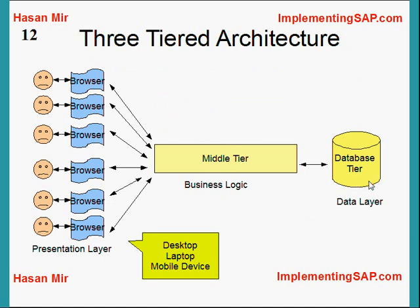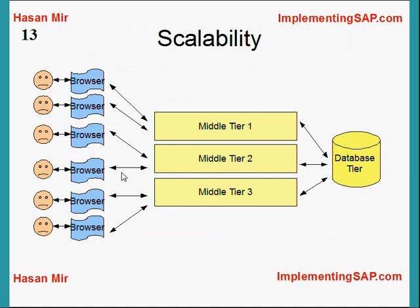The relational database management system in the database tier manages your data, and the middle-tier application talks to the database to retrieve and store data. It's a pretty flexible architecture — if the number of users increases in your company, you can scale the middle tier from one node to two or three. Some users connect to instance one, some to instance two, and the rest to instance three. This creates load sharing, while all middle-tier nodes talk to the same database.